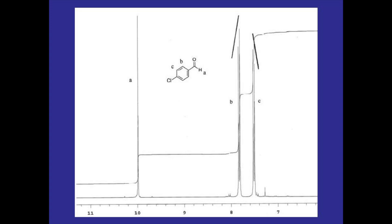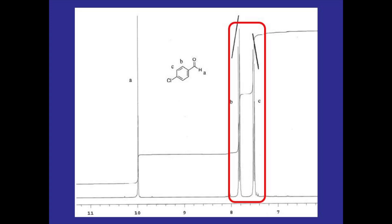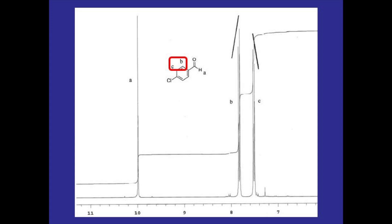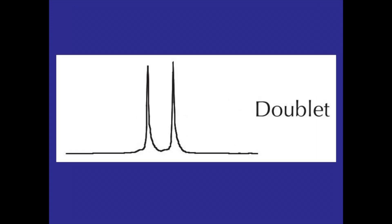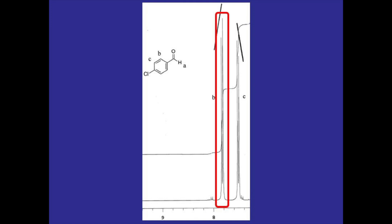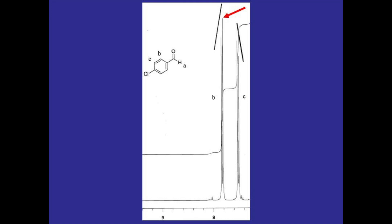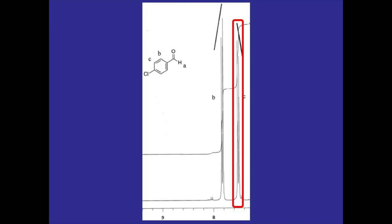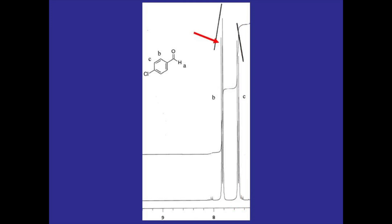I wanted to go over leaning in NMR — this example was taken directly from the post-lab questions. Let's look at hydrogens B and C, which are both doublets coupled to each other since they are neighboring hydrogens. Usually when we think of doublets we assume that the two peaks making up the doublet are symmetric, but that's actually not the case. For example, if we look at the doublet produced by hydrogen B, the peak closer to the signal from hydrogen C — the hydrogen that is splitting it — is taller than the peak further away from hydrogen C.